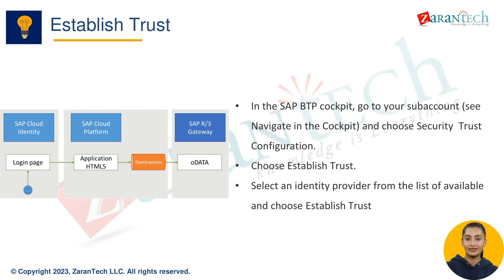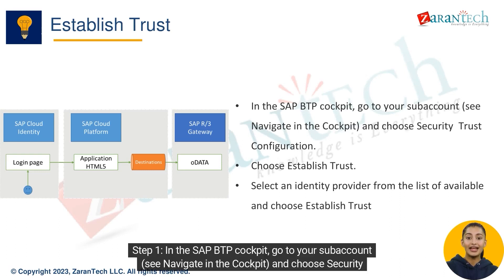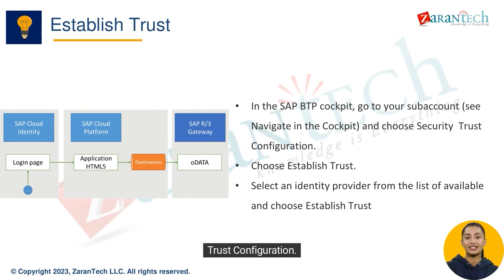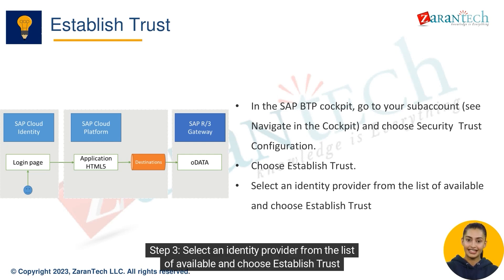Steps to establish trust. Step one: in the SAP BTP Cockpit, go to your subaccount, navigate in the cockpit and choose Security > Trust Configuration. Step two: choose Establish Trust. Step three: select an identity provider from the list of available providers and choose Establish Trust.